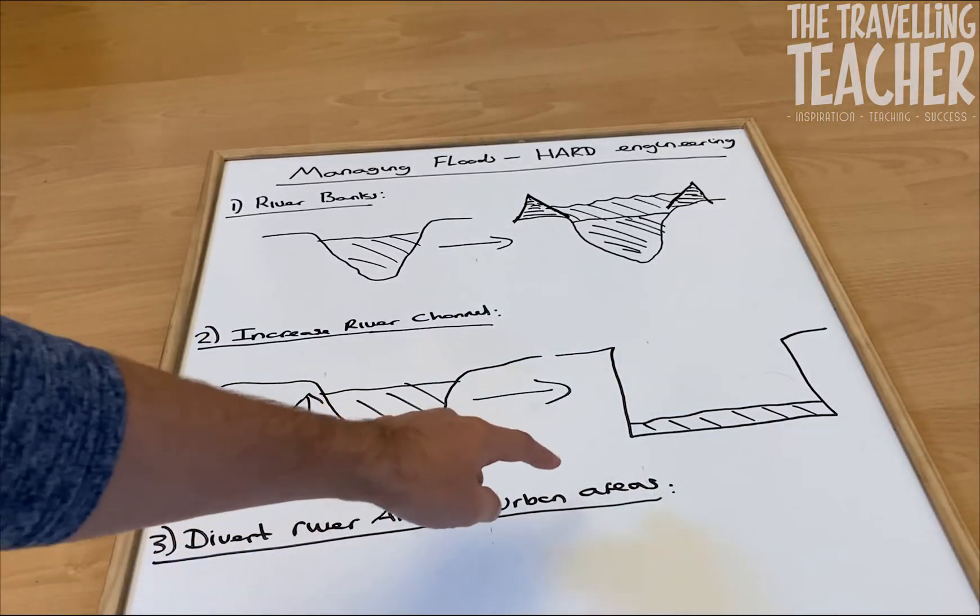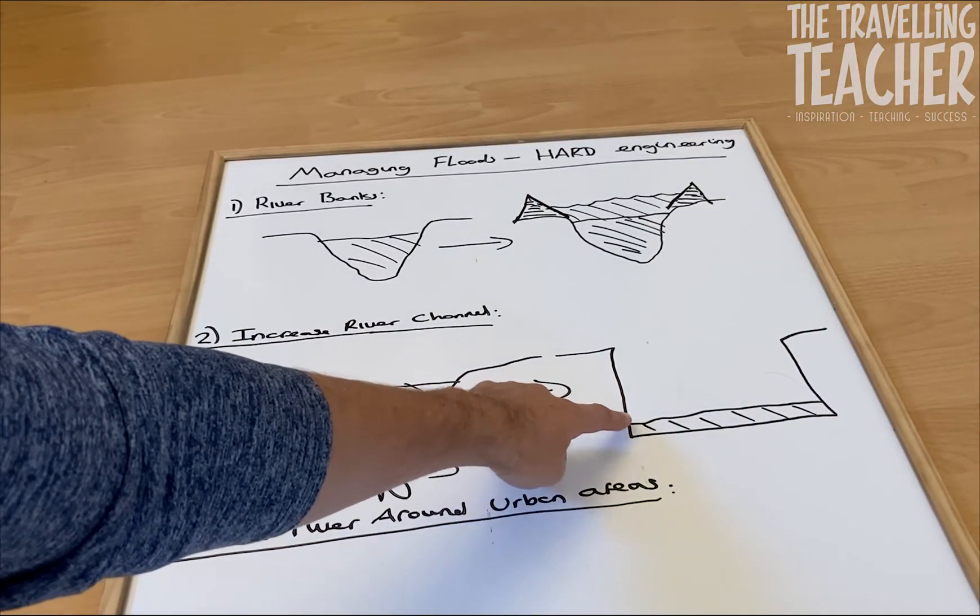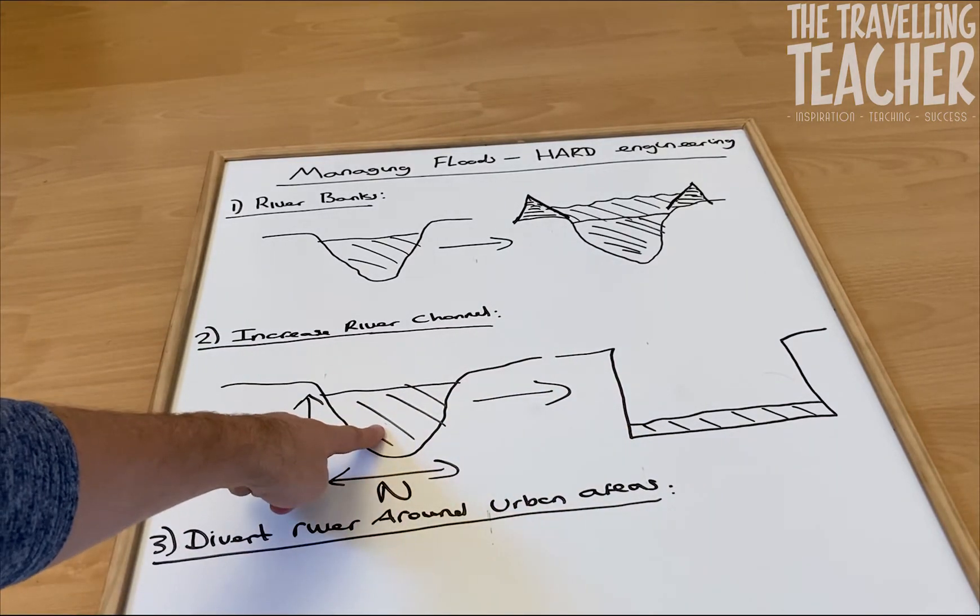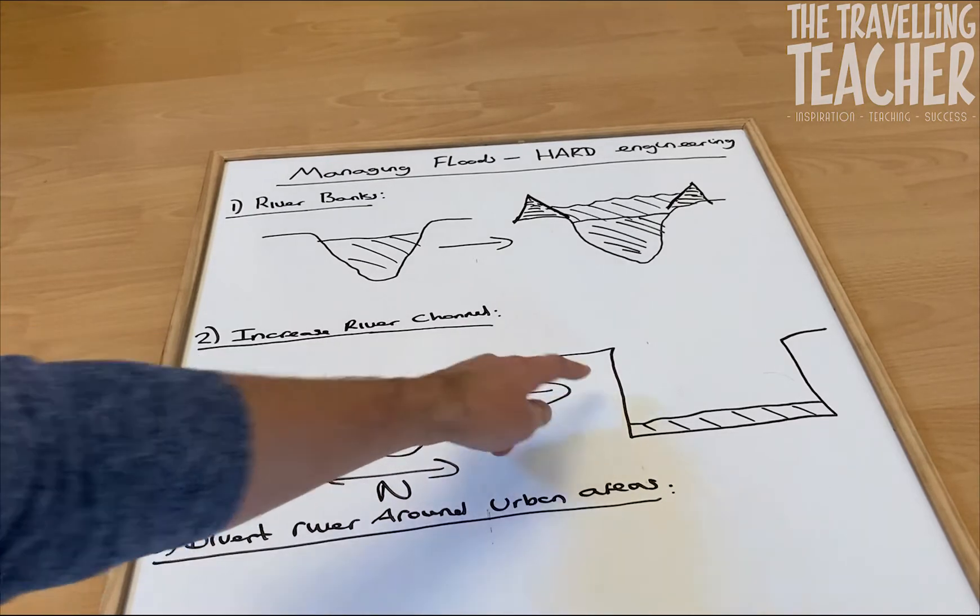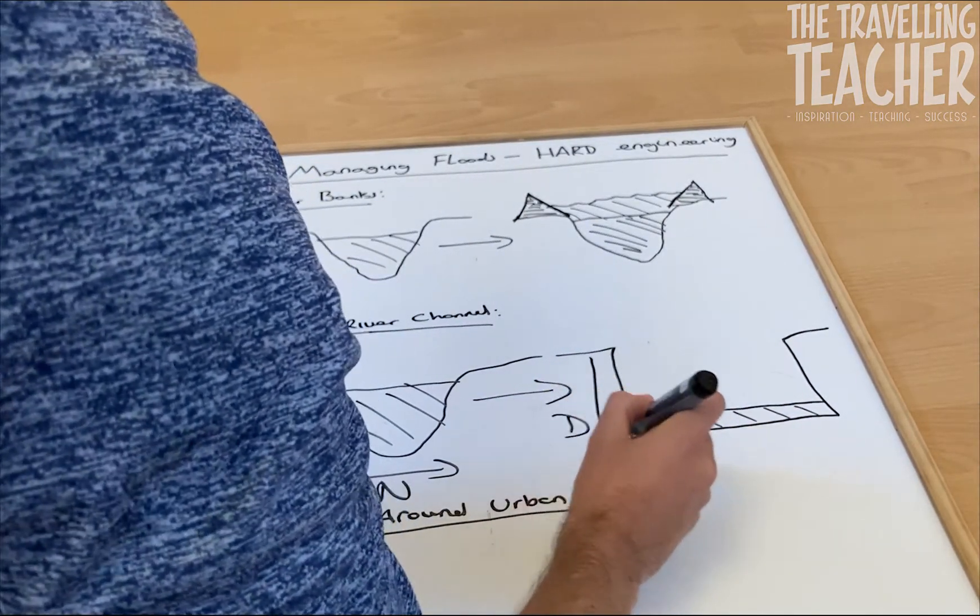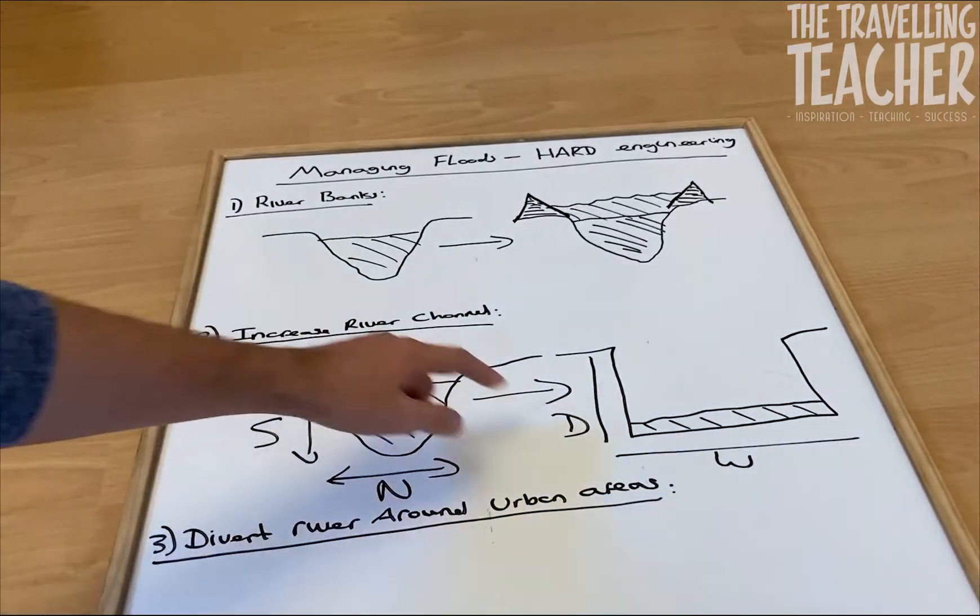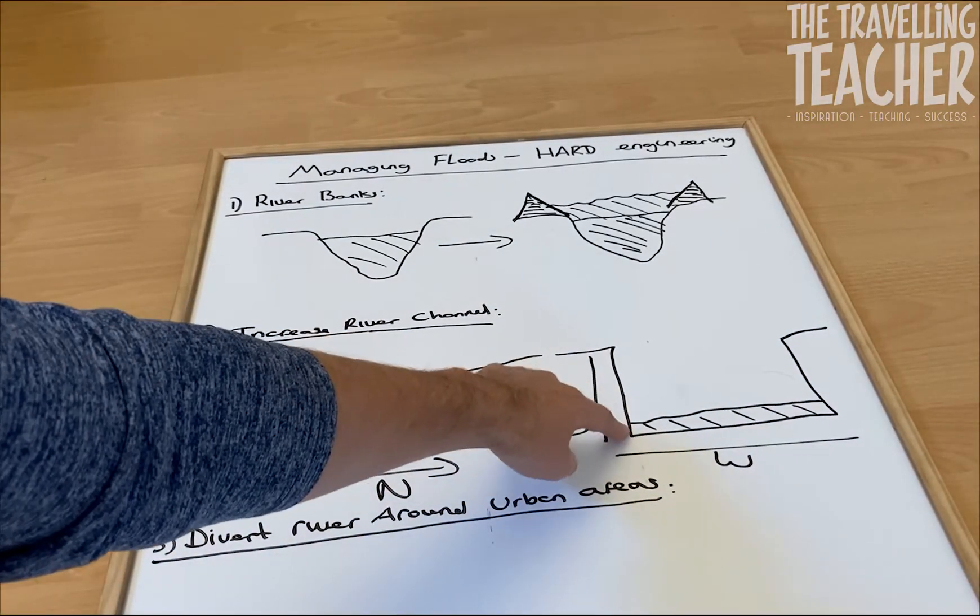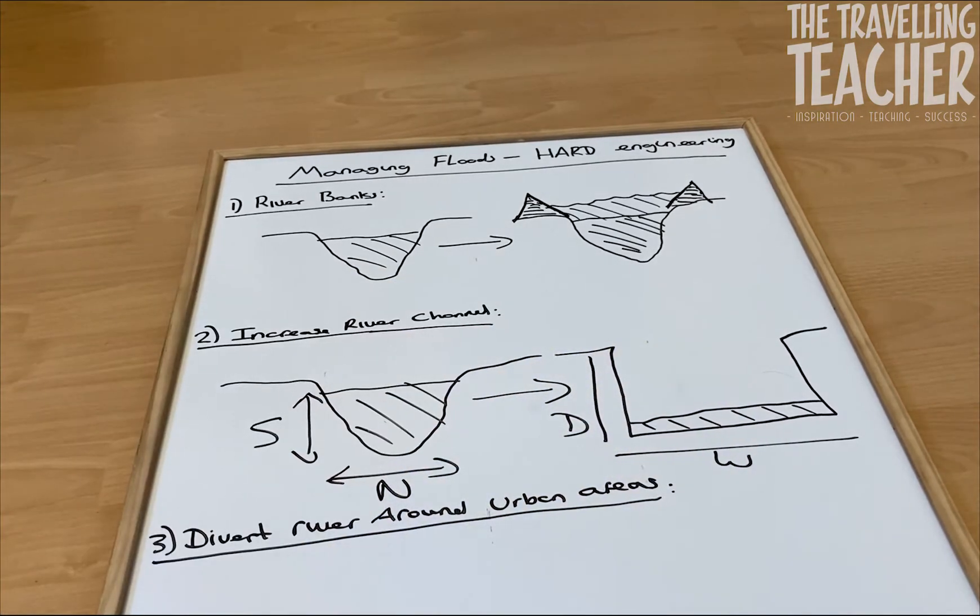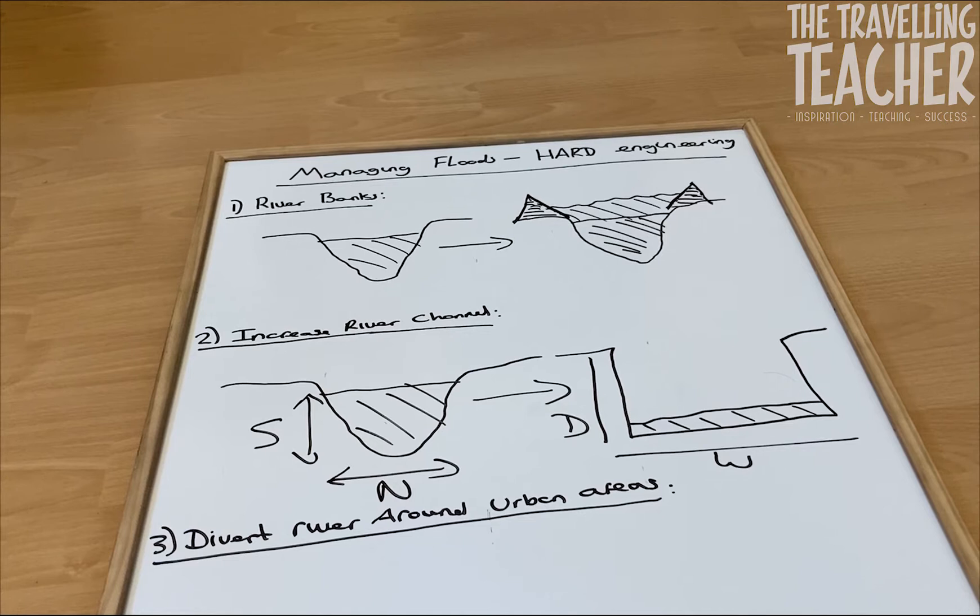Now, of course, what you can see here, this water level is the exact same amount of water as in this river channel. But because this river channel here is now much deeper, D for deep and W for wide, there's less chance that water is now going to come out of the river channel and flood the floodplain. So that's number two.